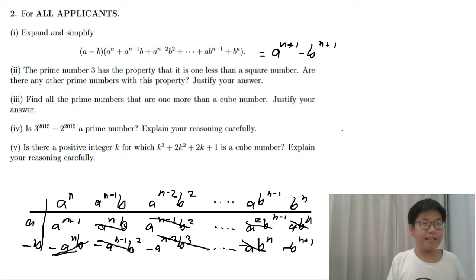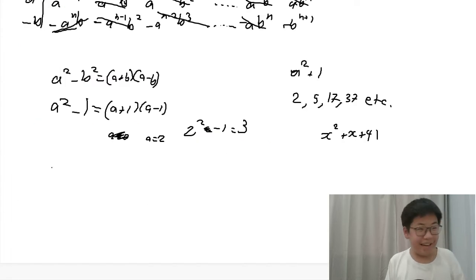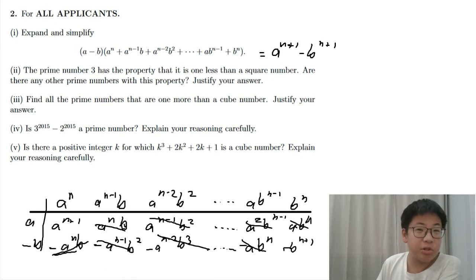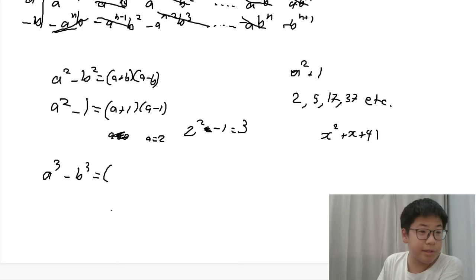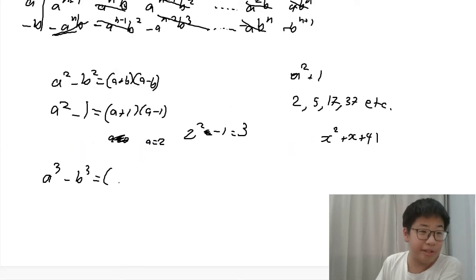Is there a positive integer k for which this is a cube number? Justify your answer. Prime numbers which are 1 more than a cube number. Now, this gets interesting. So, we can use the sum of cubes formula that we found earlier. Well, just to recap, here's our expansion. So, we substitute the n to be 2.